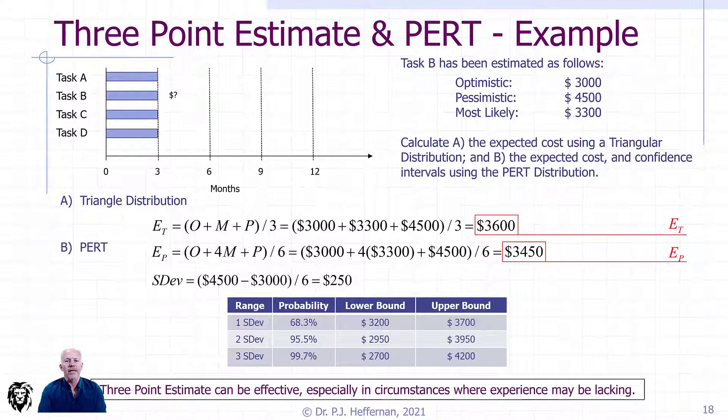Three-point estimates can be very effective, especially in circumstances where experience is lacking. They add to the conversation—remember they have to be realistic, optimistic, and pessimistic outcomes. To include this in your spreadsheet, in your work breakdown structure, it's a couple more columns. It's a conversation which probably should be happening.